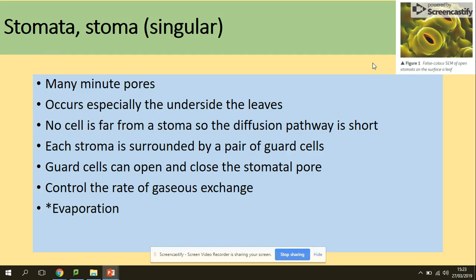Well, what is the structure of the stomata? What is stomata? We've seen it before. There are many pores that we can find especially on the lower layers of the leaf. Remember, no cell is far away from some stomata, so the diffusion pathway is short. Each stomata then is surrounded by guard cells which they can close and open, and this will control the gas exchange and of course evaporation if they stay closed.